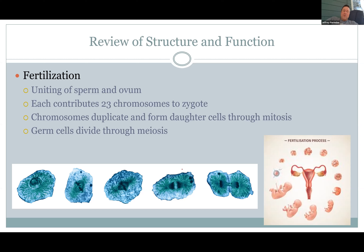Men produce sperm constantly from puberty on, really until the end. So that's one reason why if you give birth later in life, those eggs have been sitting there for decades — sometimes 40 years. They're paused in the first part of meiosis, and during that time environmental influences can happen to those eggs. It makes it more likely to get Down syndrome and other issues.